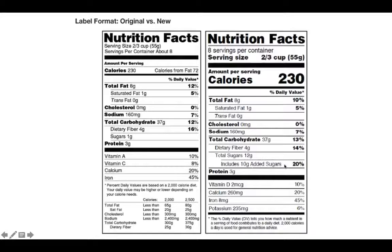This is a really important piece, because on the old food label the only way to find added sugars is to look at the ingredient list. Not a lot of people understand what the synonyms for added sugars are. For example, honey could be a synonym for an added sugar.